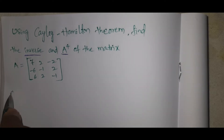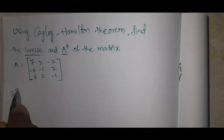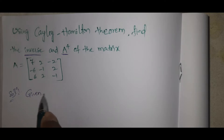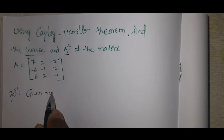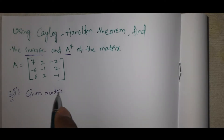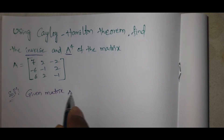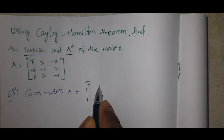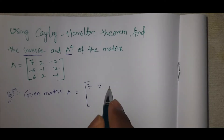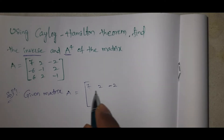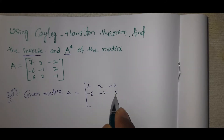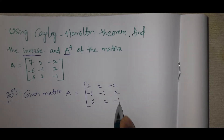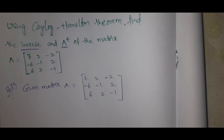The given matrix A equals: 7, 2, minus 2; minus 6, minus 1, 2; 6, 2, minus 1. This is a 3 by 3 matrix.